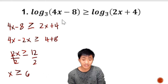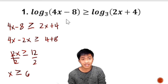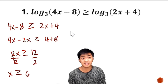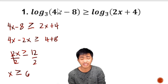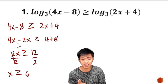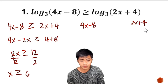We're not done because we have to be mindful of the arguments. The arguments cannot be 0 or negative because if the argument is 0 or negative, the logarithm is undefined — and if one of them is undefined, we cannot tell if it is greater than or less than the other. So we get the arguments, which are 4x minus 8 and 2x plus 4, and set each argument greater than 0.